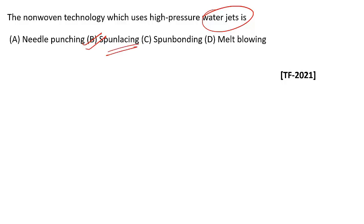What is spun lacing? Spun lacing is a process of entangling a web of loose fibers that are loosely held on a porous belt, forming a sheet structure by subjecting the fibers to multiple rows of high-pressure fine jets of water. Loose fiber webs are loosely held, and when subjected to high pressure water jets, the belt sheet is formed — this is known as the spun lacing process. So it uses high pressure water jets; option B is the right answer.